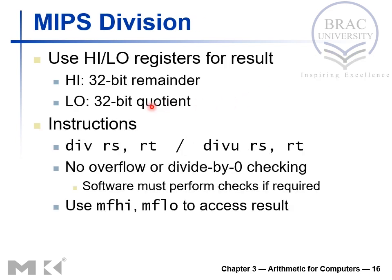Similar to multiplication, we also use high and low registers here: a 32-bit high register for the remainder and a 32-bit low register for the quotient. The MIPS division instruction is 'div rs, rt'. There is no destination register because, like multiplication, the result goes directly to the high and low registers. If we need the remainder or quotient, we perform a move-from-high or move-from-low operation.